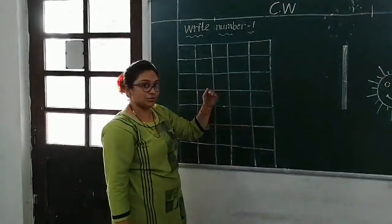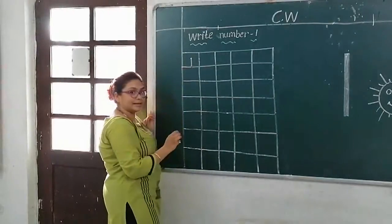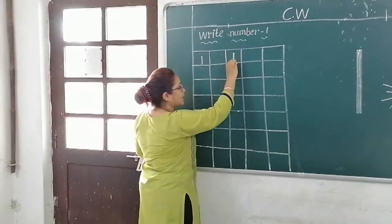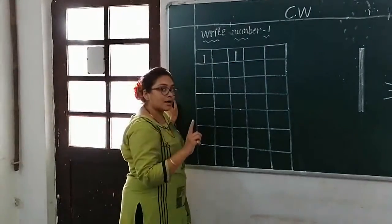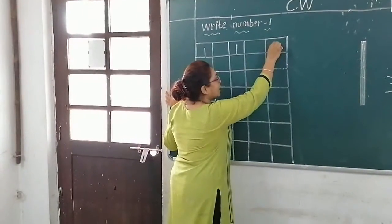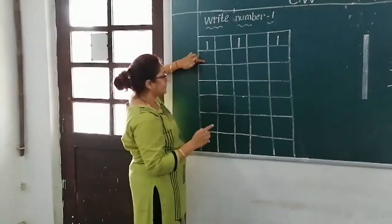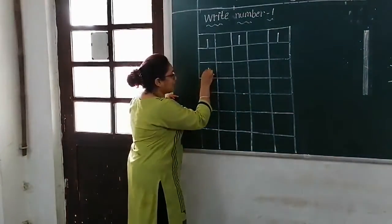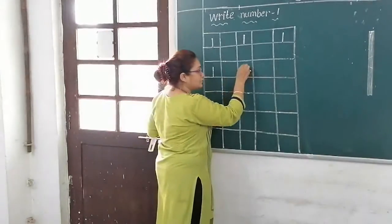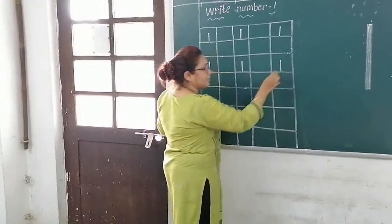Then leave one line — eight-line circuit. Then you have to write number one. How to write? Up to down, standing line, one line. Then leave one line, then write up to down, standing line, number one. Again leave one line. Then touch the blue line and write number one. Anna, touch the blue line and write number one.